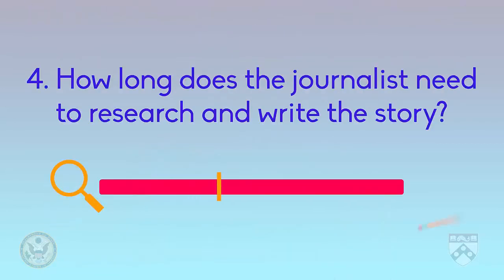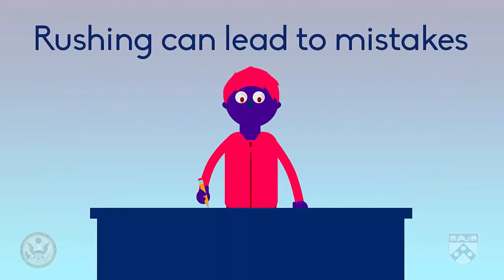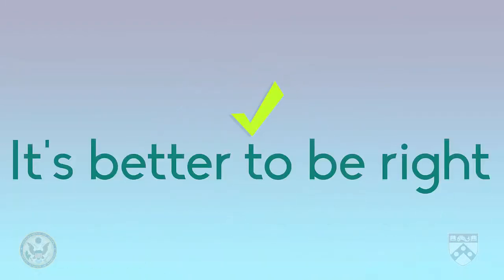The final question that should be answered in the pitch is: how long does the journalist need to research and write the story? Many times, newspapers are competing with one another to tell the story first. But first is not always better. For example, if a journalist is rushing to be first, they might make more mistakes. If this happens, the audience could lose trust in that journalist, or even in the newspaper. So while being first is good, it's better to be right. Editors will want to know when they can expect the story to be completed.